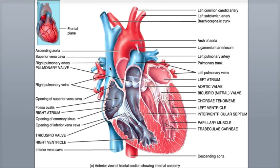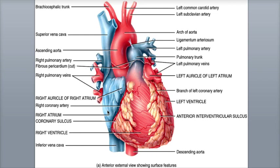Remember that veins always drain blood into the heart. And for color coding in the diagrams, blue represents oxygen-poor or deoxygenated blood, while red indicates oxygenated or oxygen-rich blood. The anterior wall of the right atrium and auricle has a rough appearance due to pectinate muscles, which are muscular bundles projecting up from the atrial wall.